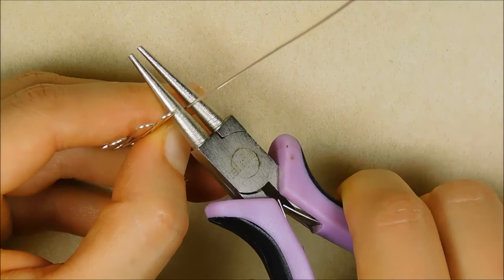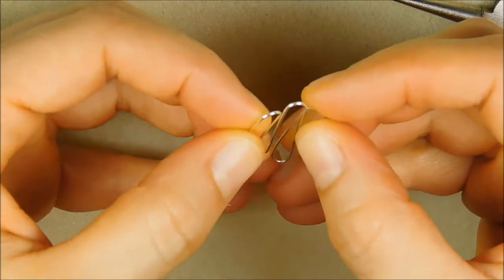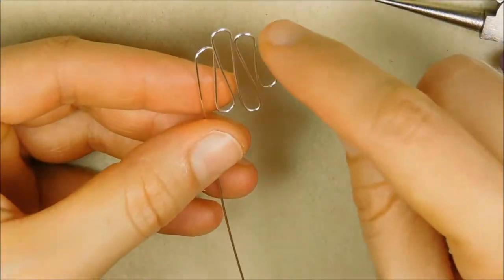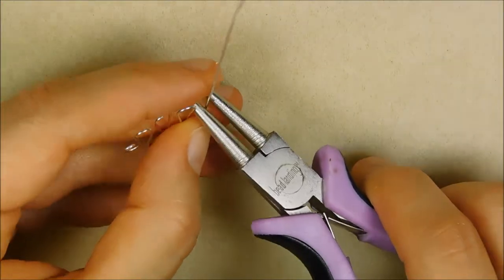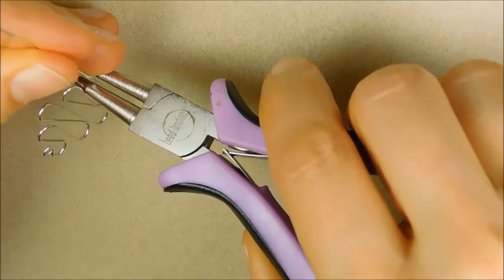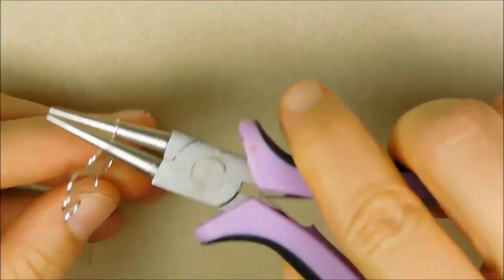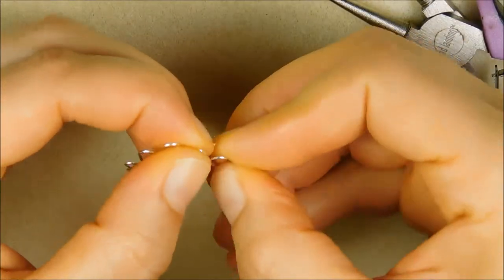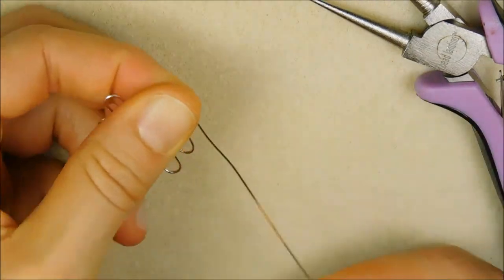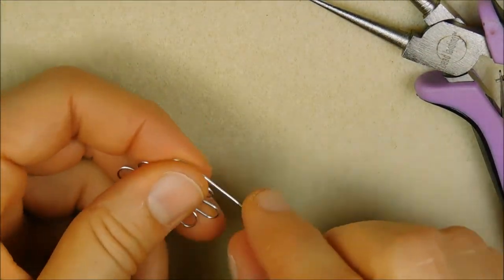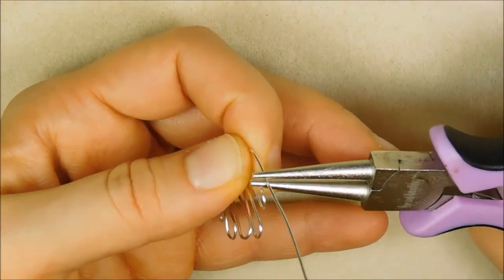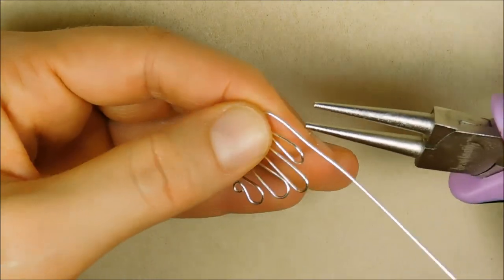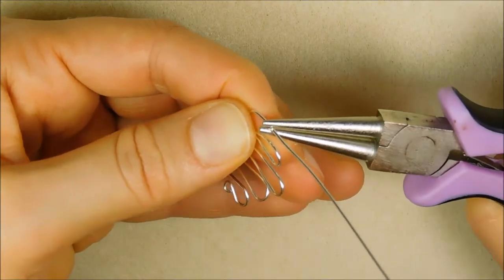The seventh curve continues to move in toward the center of the design. And the eighth curve mimics the very first curve you made right after the original basic loop. After making a final curve count to ensure that you've got eight, create the second basic loop.